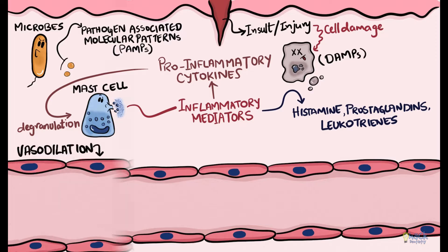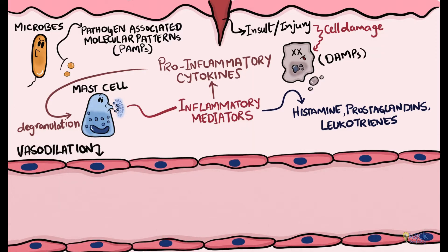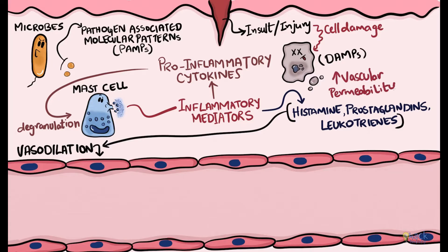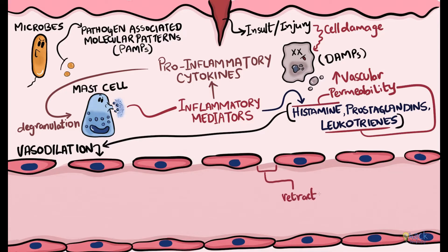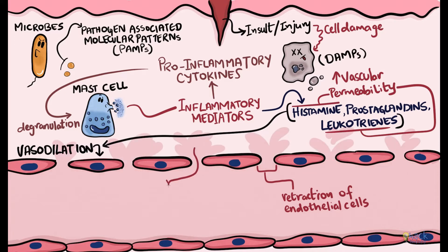Acute inflammation begins with vasodilation of arterioles and capillaries, which can be caused by histamine, leukotrienes and prostaglandins. This is followed by increased vascular permeability. Histamine and leukotrienes can cause retraction of endothelial cells creating small gaps in the vessel walls, and plasma proteins leak out of the blood vessel through these gaps and accumulate in the extravascular space causing edema.